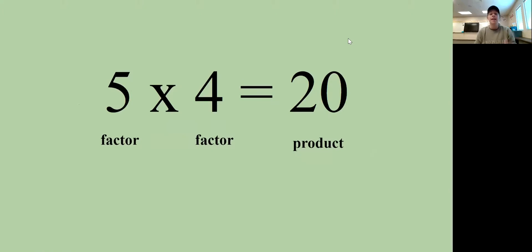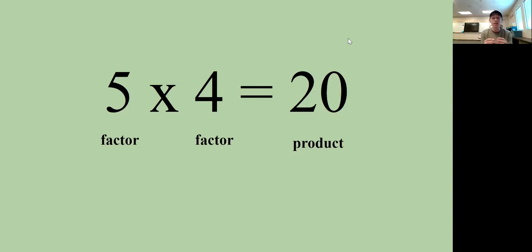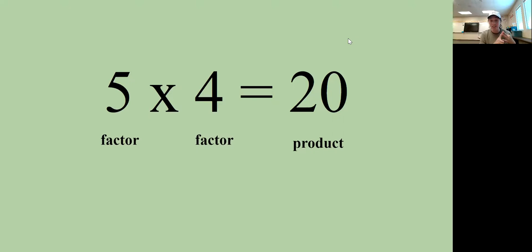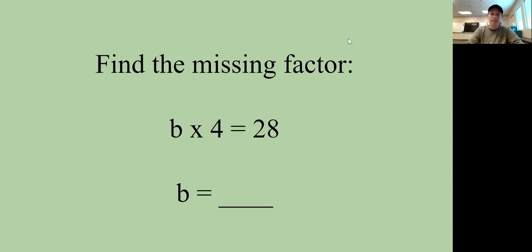Here is important vocabulary: the two numbers you're multiplying are called factors, and the answer to a multiplication problem is called the product. So in 5 times 4 equals 20 — both 5 and 4 are factors, and 20 is the product. Let's review: the answer to addition is the sum, the answer to subtraction is the difference, and the answer to multiplication is the product.